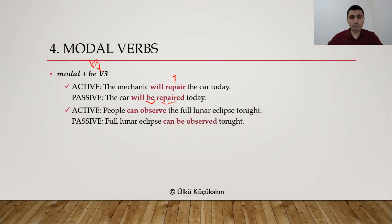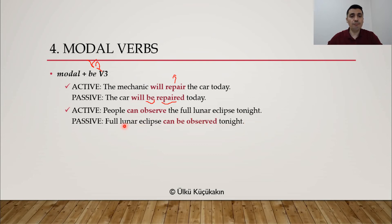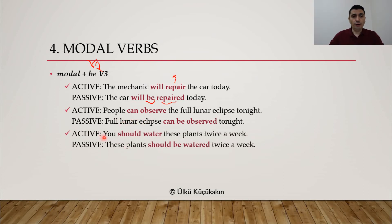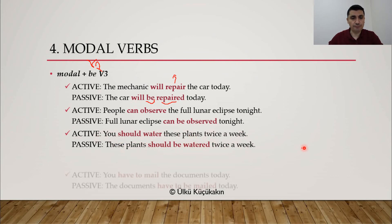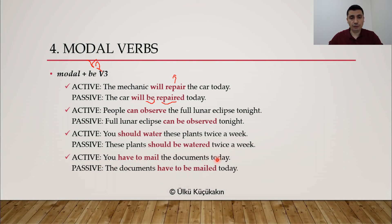More examples with modals: 'People can observe the full lunar eclipse tonight.' Passive: 'The full lunar eclipse can be observed tonight' — CAN plus verb 1 BE, and OBSERVED is verb 3. Also: 'You should water these plants twice a week.' Passive: 'These plants should be watered twice a week' — SHOULD plus BE (verb 1) and WATERED (verb 3). And finally: 'You have to mail the documents today.' Passive: 'The documents have to be mailed today' — HAVE TO plus BE plus verb 3.